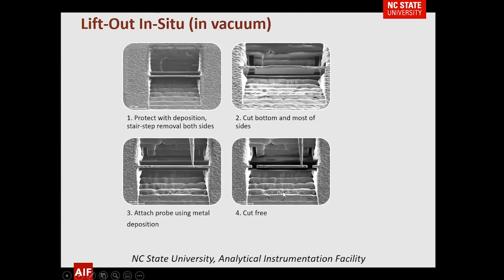The third process is lift-out in vacuum. In vacuum we bring in a manipulator and move the sample to the TEM grid within the vacuum system. We've deposited a protective layer, cut out material from either side, tilted the sample, and are cutting away almost totally. We bring in a needle and attach it with metal deposition.